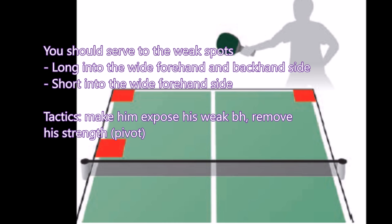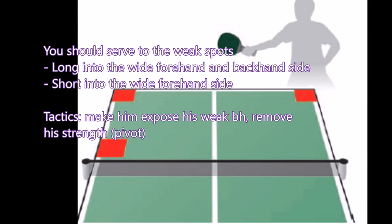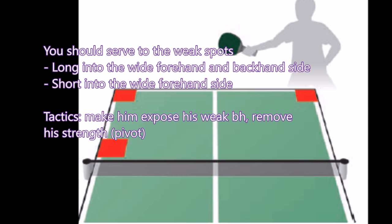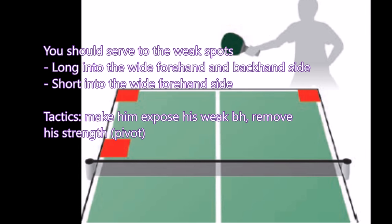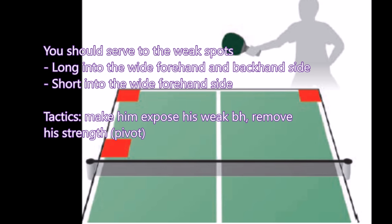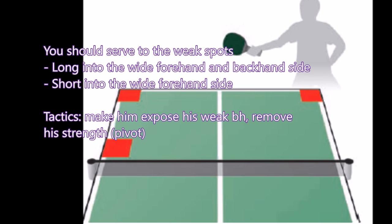Remember, when you find a forehand dominant player, use this tactic to serve and to attack. There are two options: long to his wide forehand, long to his backhand side, and short into the wide forehand side. Very good tactics.